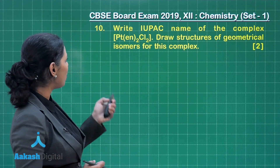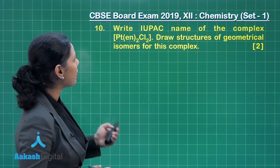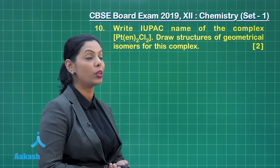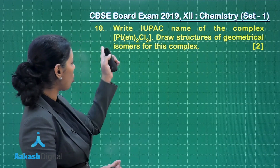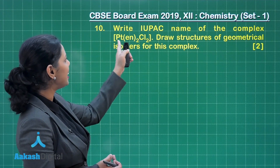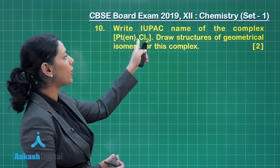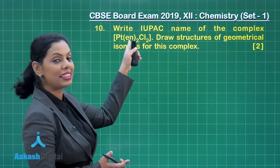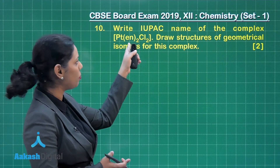Now let us take question number 10 of this paper. Write the IUPAC name of the complex. The complex is [Pt(en)₂]Cl₂, where the ligand is ethane-1,2-diamine.